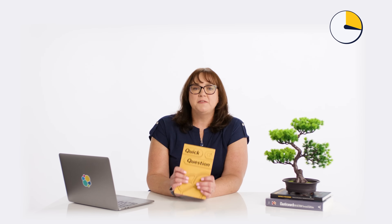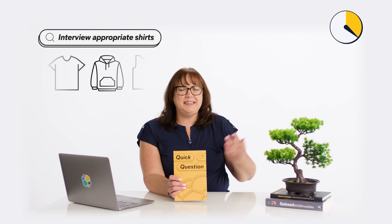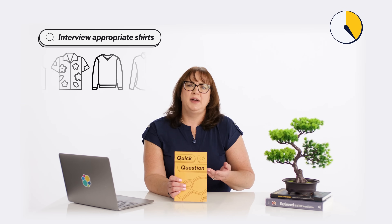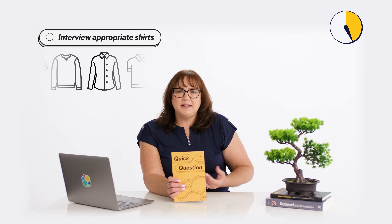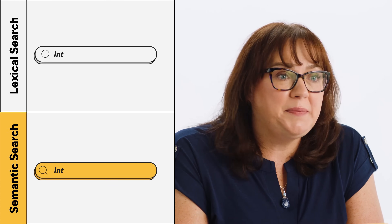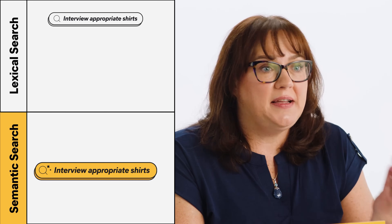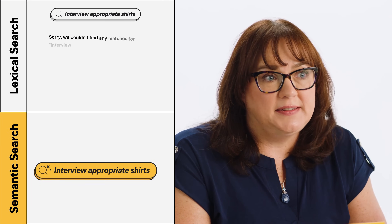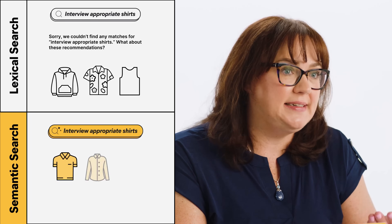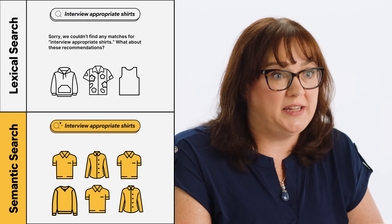Semantic intent is the meaning behind your search. For example, if you're searching for interview-appropriate shirts, you're probably not looking for a t-shirt or a hoodie. You want a dress shirt, maybe a collared shirt, maybe something buttoned down — something that you could wear to an interview. Text search results probably aren't going to return good results for that because we don't have the keywords 'interview-appropriate' in the results. But semantic search understands that meaning and will return the dress shirts, the appropriate shirts that you want.